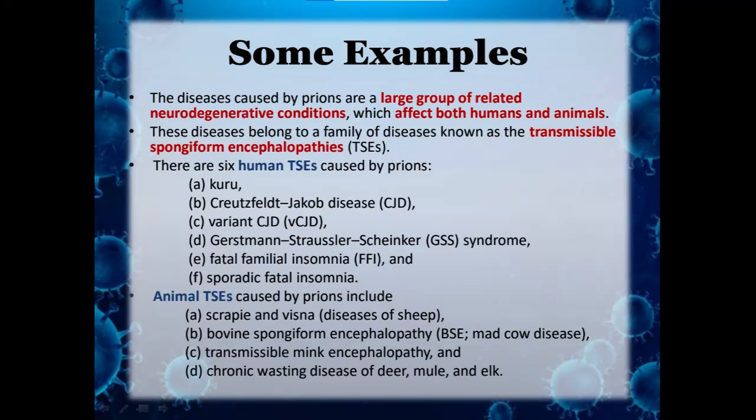Prion diseases are a large group of related neurodegenerative conditions affecting both humans and animals, belonging to a family known as transmissible spongiform encephalopathies. There are six human transmissible spongiform encephalopathies caused by prions: Kuru, CJD, variant CJD, GSS, FFI, and sporadic fatal insomnia. In animals, prion diseases include scrapie and visna in sheep, bovine spongiform encephalopathy commonly known as mad cow disease, transmissible mink encephalopathy, and chronic wasting disease of deer, mule, and elk.